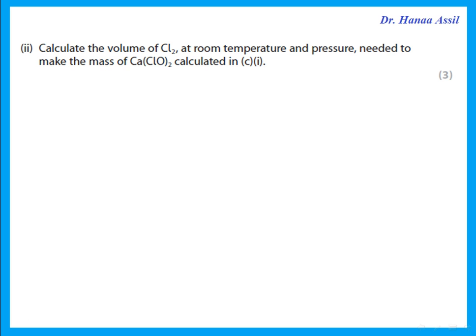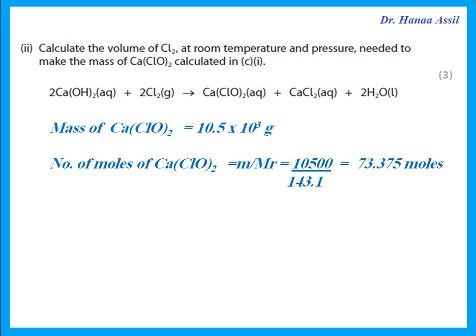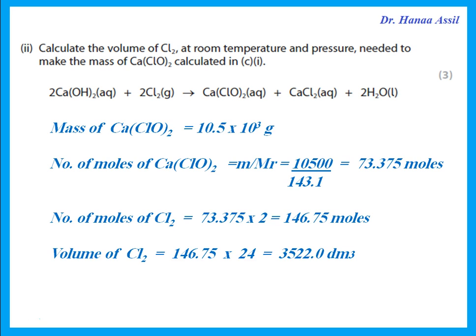Calculate the volume of chlorine at room temperature and pressure needed to make that mass. Using the equation, find the moles of product from mass ÷ molar mass (143.1). From the stoichiometry, the moles of chlorine needed is twice that of the product. Volume of a gas equals moles × 24, giving the volume in dm³.